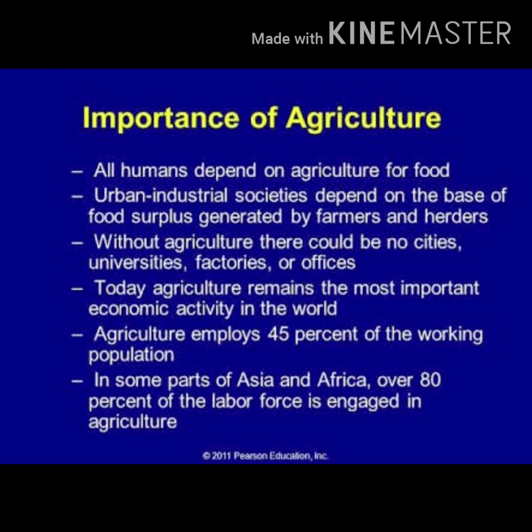Agriculture is possible only where certain factors are favorable, such as climate, soil, topography, and growing season. For example, in the month of December you can't grow mangoes — there is a particular season for growing food crops. Climate plays a very important role: temperature and rainfall are the main factors required to grow a particular crop.